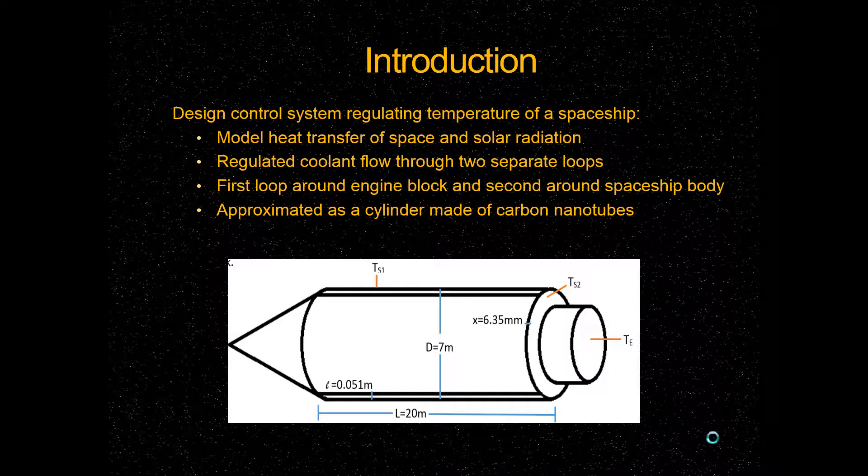One of the loops was around the engine block and was modeled as a jacketed coolant reactor. The second was around the spaceship body, and it just flows all around the exterior of that surface labeled as TS1. We approximated this spaceship as a cylinder made out of carbon nanotubes.